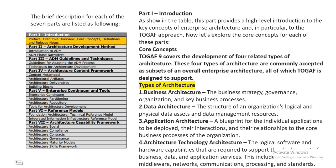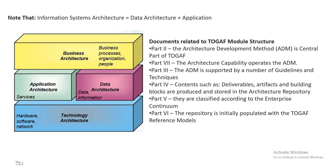Moving on, you can see the information systems architecture, which is data architecture plus application. This covers business processes, business architecture, and application architecture, including services. Data and data information, and technology — hardware, software, and network — are also part of this.